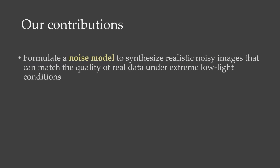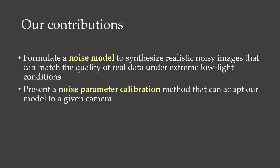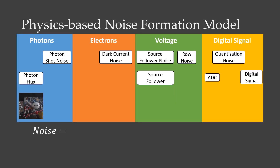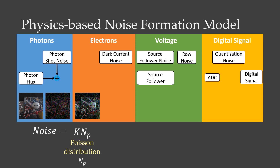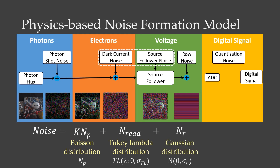Our contributions are threefold. First, we formulate a noise model to synthesize realistic noise images. Second, we present a noise parameter calibration method. Third, we collect an extreme low-light denoising dataset to verify the effectiveness of our model. Our noise model is derived from the inherent process of electronic imaging. The photon shot noise is modeled by a Poisson distribution. The read noise is characterized by a long-tailed two-component Gaussian distribution.